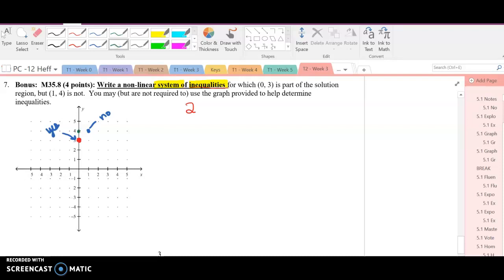If I had a quadratic with a vertex at 4 and went over 1 down, over 2 down 1, 2, 3, 4 over 1, down, over 2 down 4, it would look like this. If we shaded below it, we would have the one that we want, (0, 3), and it would not have the other one. Now I just need another system.